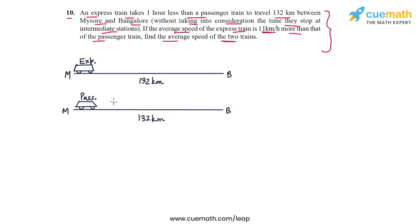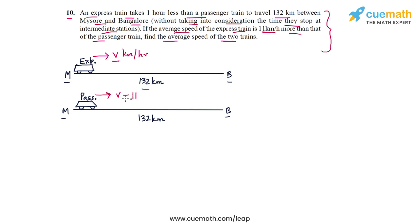Here's a visual representing the two situations: the express train goes from Mysore to Bangalore, a distance of 132 kilometers; the passenger train does the same, but the express train takes one hour less. If we assume the average speed of the express train is v kilometers per hour, then the average speed of the passenger train can be written as v minus 11 kilometers per hour, since the express train is 11 kilometers per hour faster.